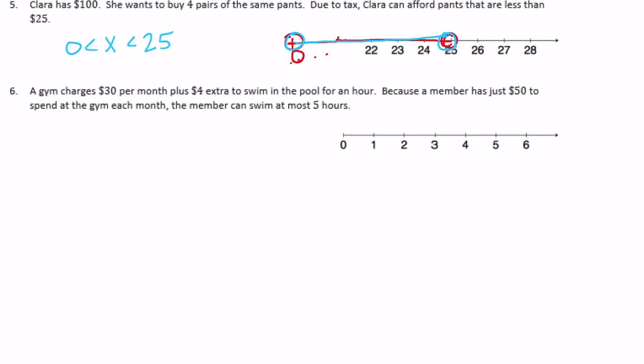And number six. A gym charges $30 per month plus $4 extra to swim in the pool for an hour. Because a member has just $50 to spend at the gym each month, the member can swim at most five hours. So they can swim at most five hours or they could swim zero hours.